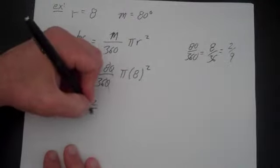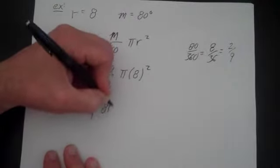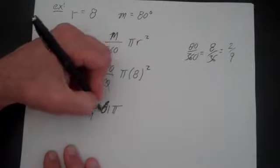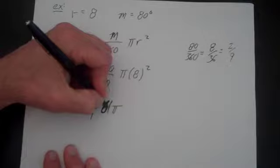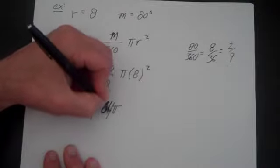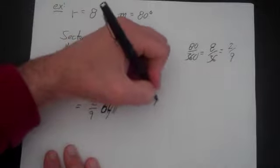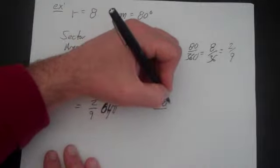So that's 2 ninths times 64 pi. 8 times 8 is 64. So your final answer is going to be 128 pi over 9.